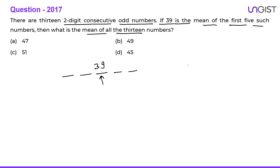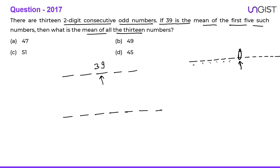The mean of all 13 consecutive odd numbers will be the seventh term. Since 39 is the third term of the first 5, the subsequent consecutive odd numbers are 41, 43, 45, and 47. The seventh term overall is 47. So 47 is the mean of all 13 numbers. Option A is the correct choice.